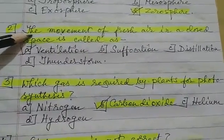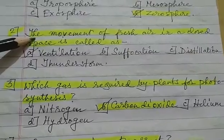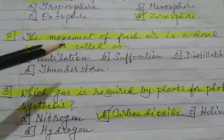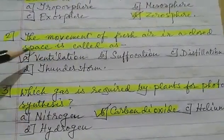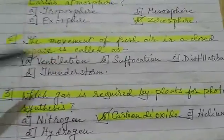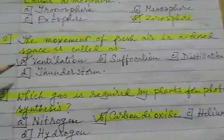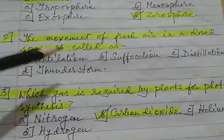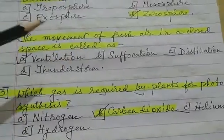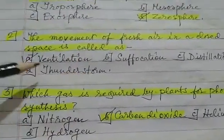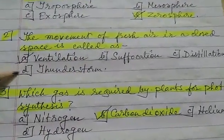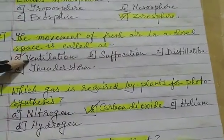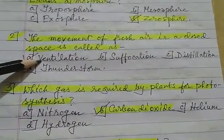Number 2: the movement of air in a closed space is called — option A) ventilation, B) suffocation, C) distillation, D) thunderstorm. The answer is ventilation.